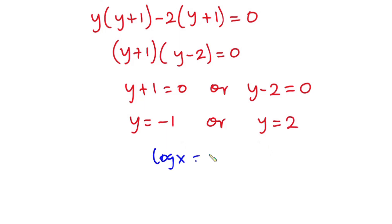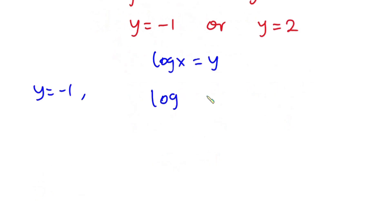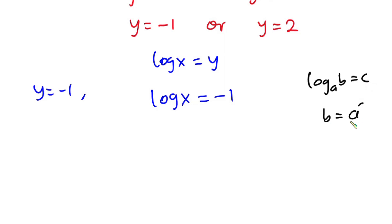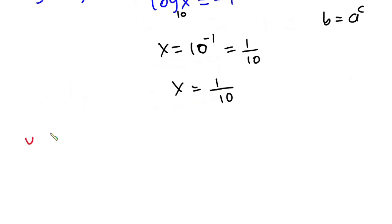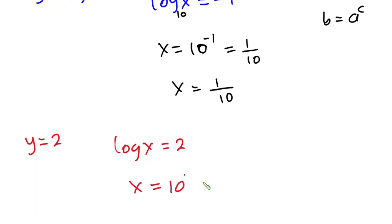Don't forget that we said log x equals y. So when y equals negative one, we have log base 10 of x equals negative one. Using the definition of logarithm — if log base a of b equals c, then b equals a to the power c — we get x equals 10 to the power negative one, which is one over ten. When y equals two, log base 10 of x equals two, so x equals 10 squared, which is 100.